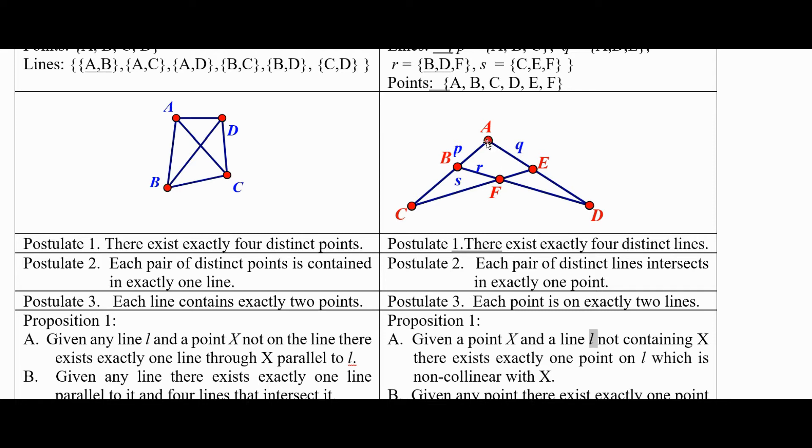and a line not containing A, that would be this one right here, there's exactly one point on this line, which is non-collinear with A. Well, E's collinear with A, C's collinear with A, but F is not.